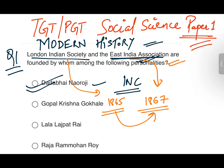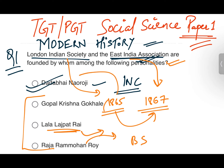The London Indian Society was established by him in 1865 — there is a two-year difference between the two. You also need to remember these years. The other options are also important: Raja Ram Mohan Roy founded Brahmo Samaj, and Lala Lajpat Rai established the Servants of People Society in Lahore.